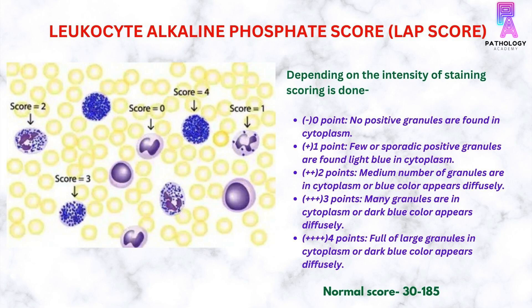2 points is given when there are a medium number of granules in the cytoplasm or the blue color appears diffusely. 3 points is given when there are many granules in the cytoplasm and dark blue color appears diffusely. 4 points is given when the cytoplasm is full of large granules and dark blue color appears diffusely.